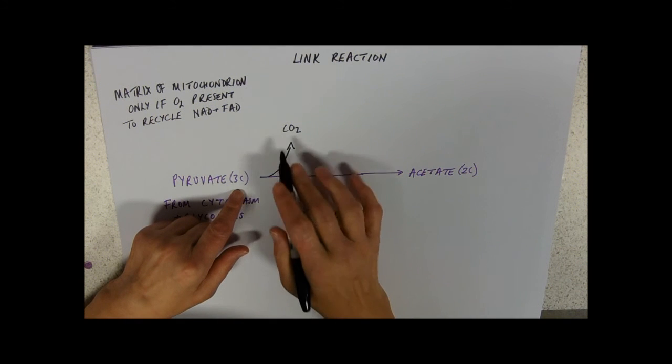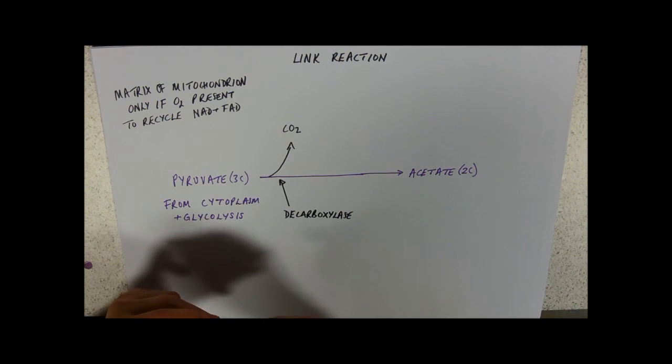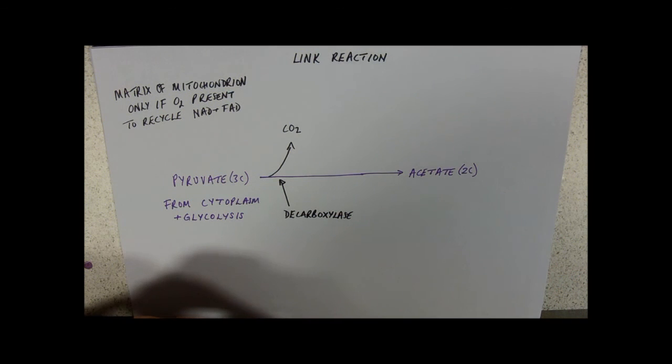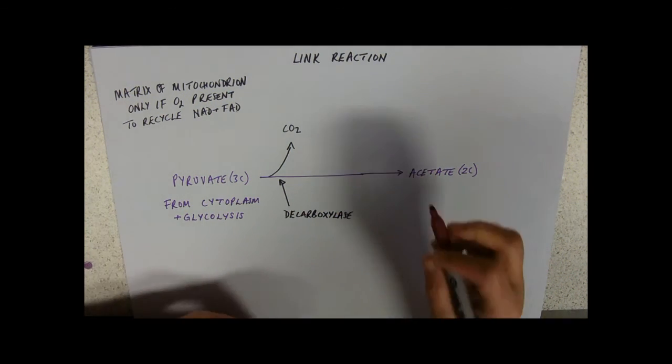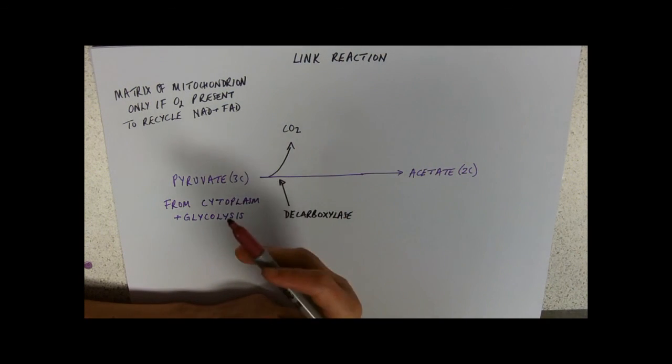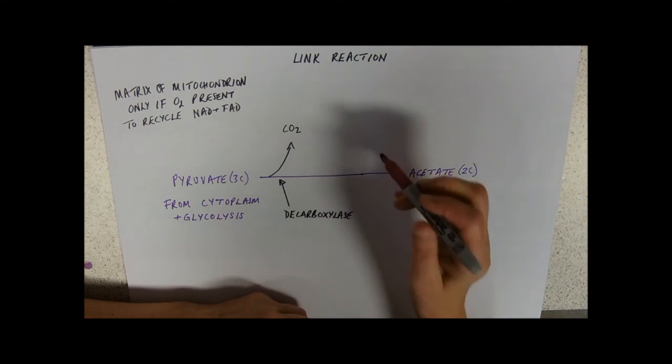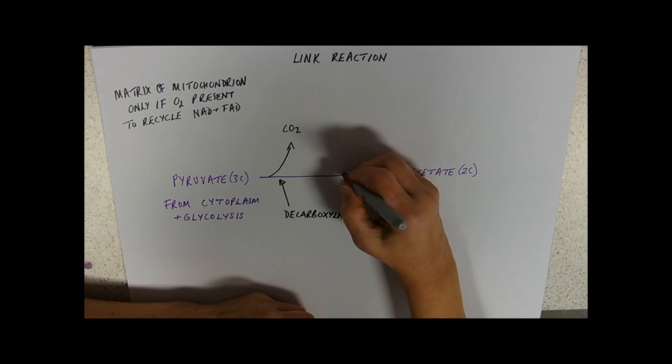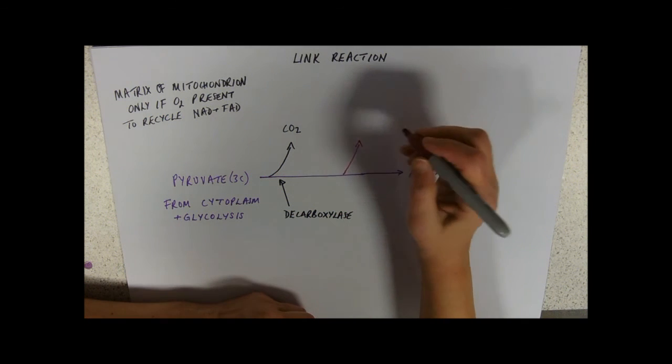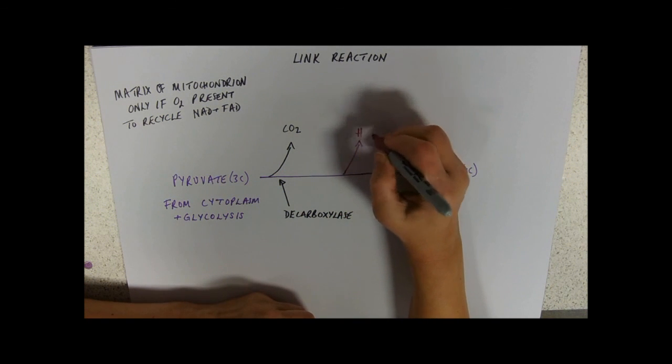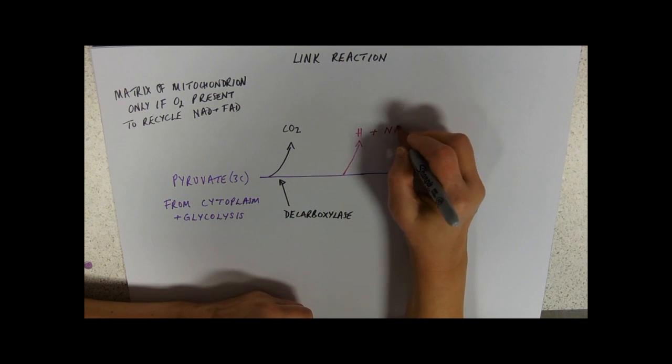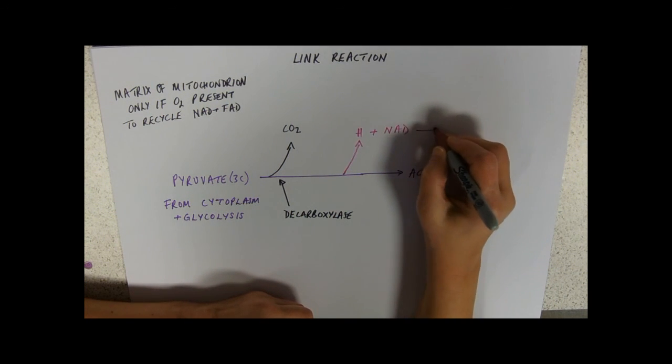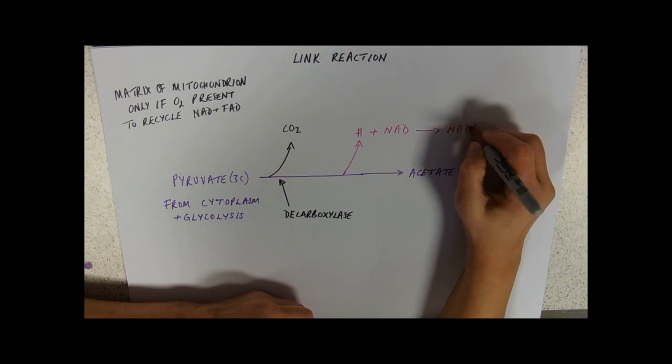If we're taking one carbon away from three, we're going to end up with a two carbon compound. We also need to take away some hydrogen. That's the relationship between pyruvate and acetate. Pyruvate has one less carbon dioxide and less hydrogen. What do we do with all our hydrogen that we've taken away? Give it to NAD to make NADH.